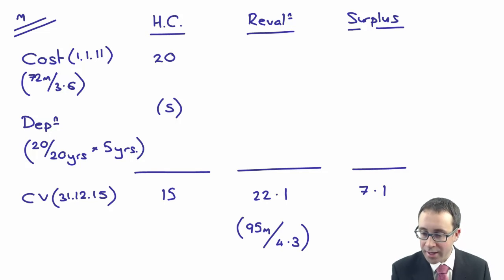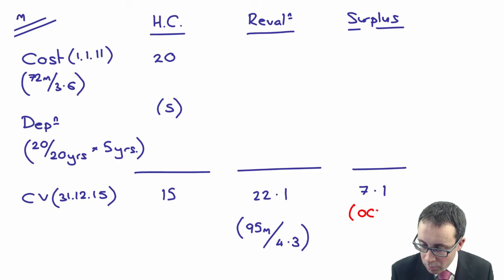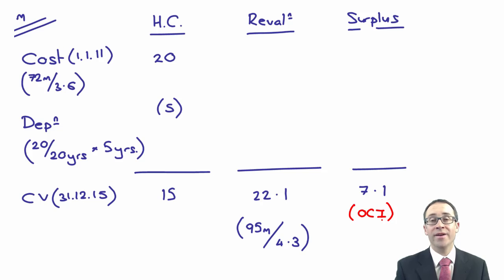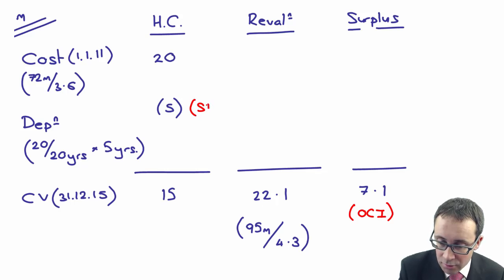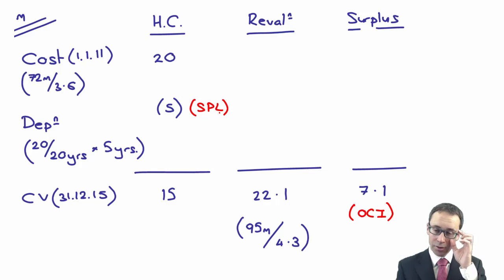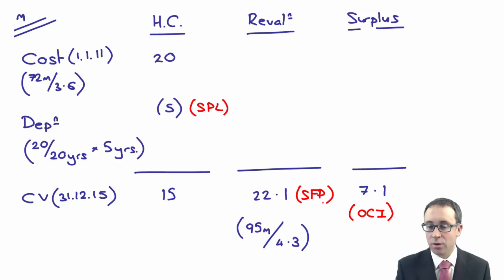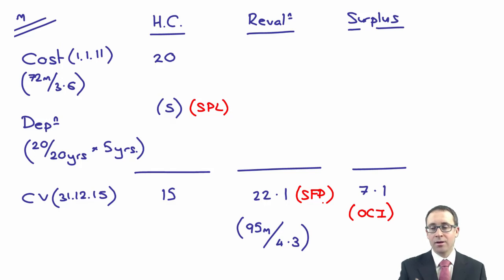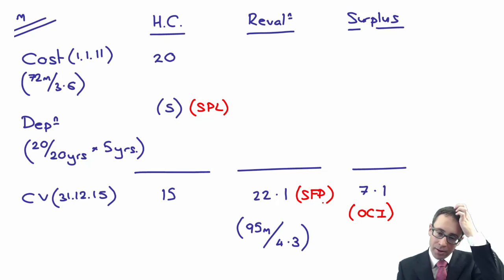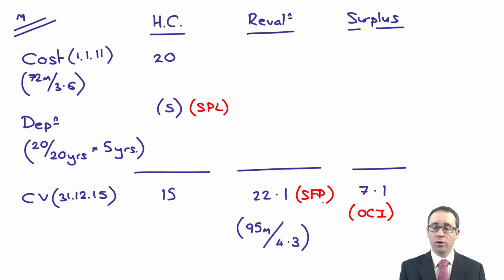The gain of $7.1 million goes through other comprehensive income, feeding directly into other components of equity. The depreciation charge of $5 million for the year goes to the statement of profit or loss. The carrying value of $22.1 million is what appears on the statement of financial position. You would add the $7.1 million revaluation surplus to the previous carrying value of $15 million to arrive at $22.1 million.